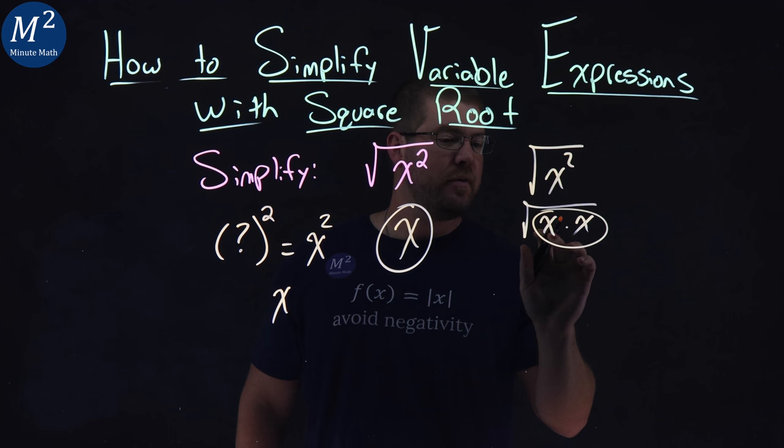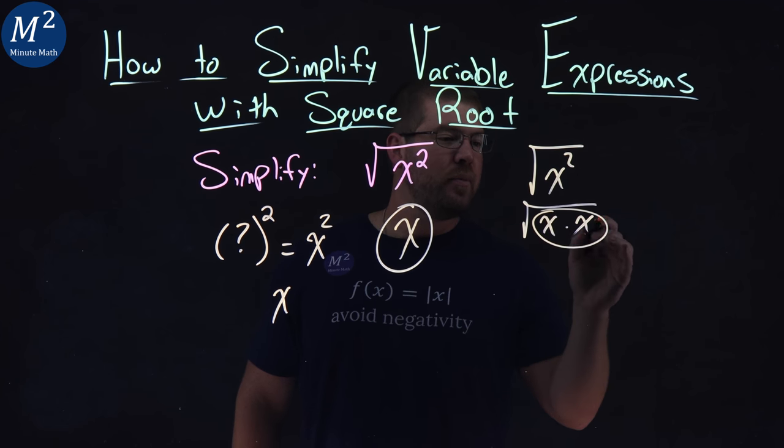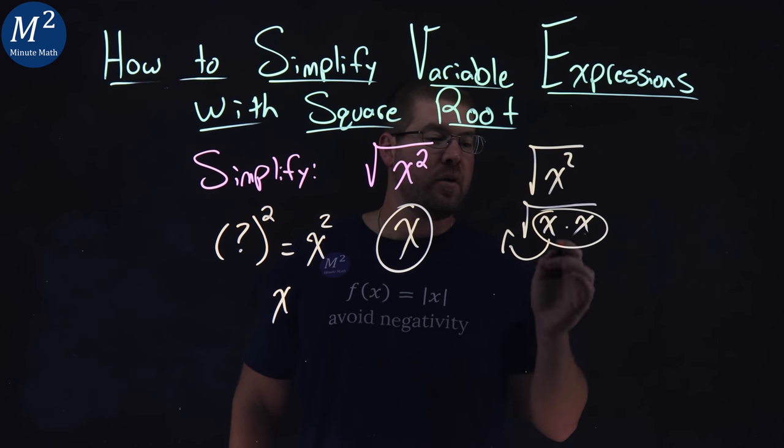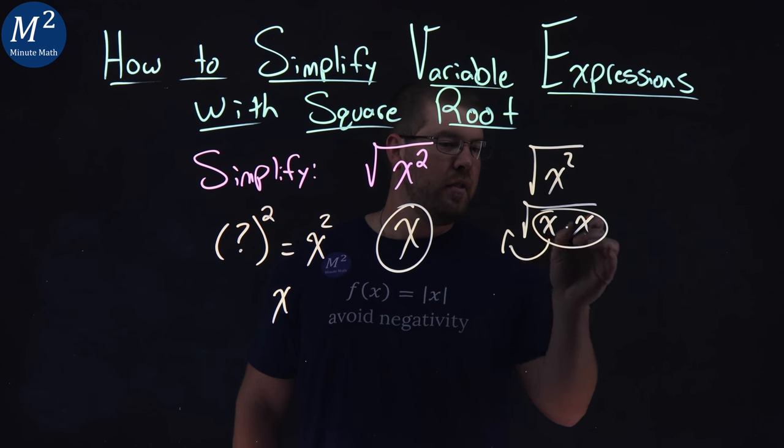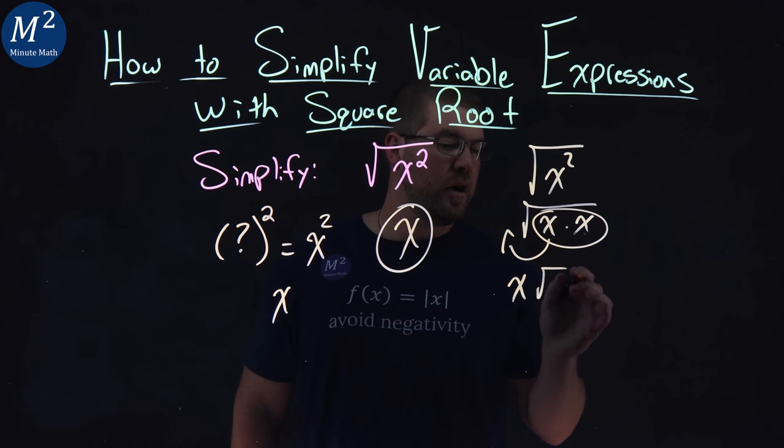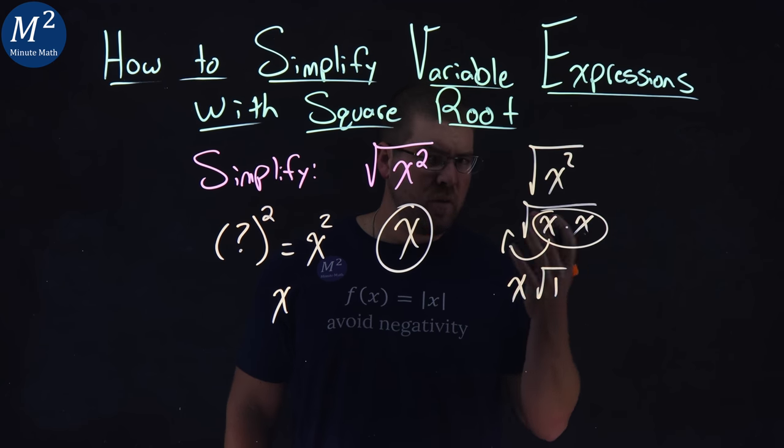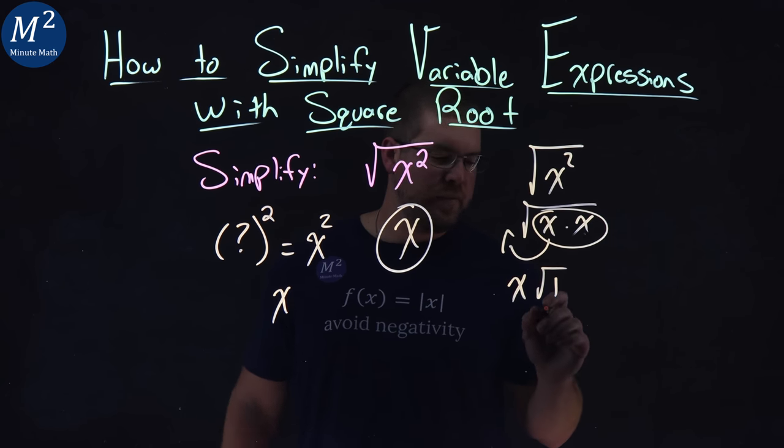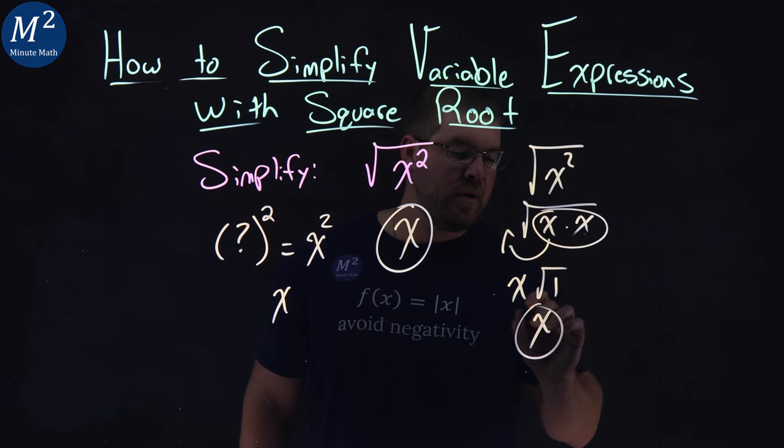One times the other, x and an x, we can pull one out to be outside the square root, and we keep what's on the inside. So we pull this out, the two become one on the outside, we have x, and then the square root of just one on the inside. Square root of one is just one. So we can write x.